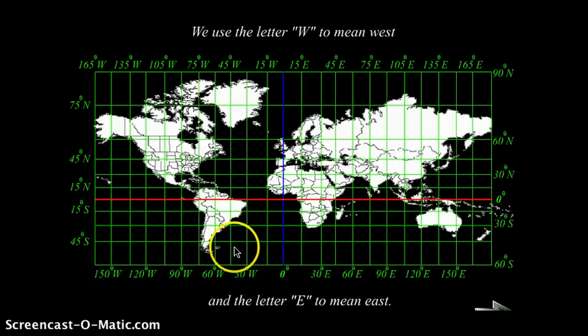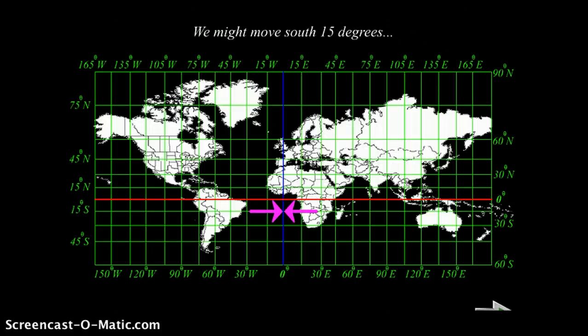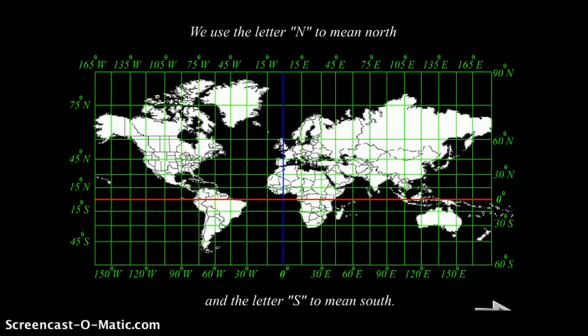We use the letter W to mean west and E to mean east. Moving up or down from the equator, we use the lines of latitude. This is the equator. To move up or down, we use the lines of latitude. We might move south 15 degrees or north 30 degrees. That would be 30 degrees north, two points above. We use the letter N to mean north and the letter S to mean south, like we did on our compass rose.